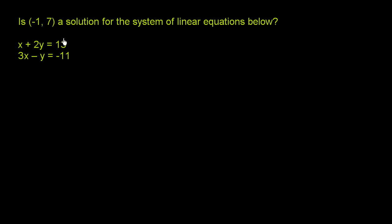Is negative 1 comma 7 a solution for the system of linear equations below? The first equation is x plus 2y is equal to 13. The second equation is 3x minus y is equal to negative 11.